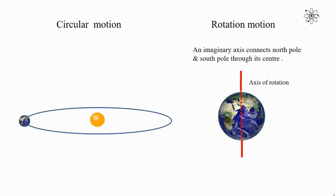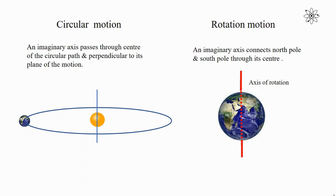In the case of circular motion of the earth, an imaginary axis passes through the center of the circular path and is perpendicular to its plane of motion. This imaginary axis in circular motion is also known as the axis of rotation. But here you can see the difference — this axis of rotation is not part of the earth, or the body which performs circular motion, but it passes through the center of the circular path and perpendicular to its plane of motion.